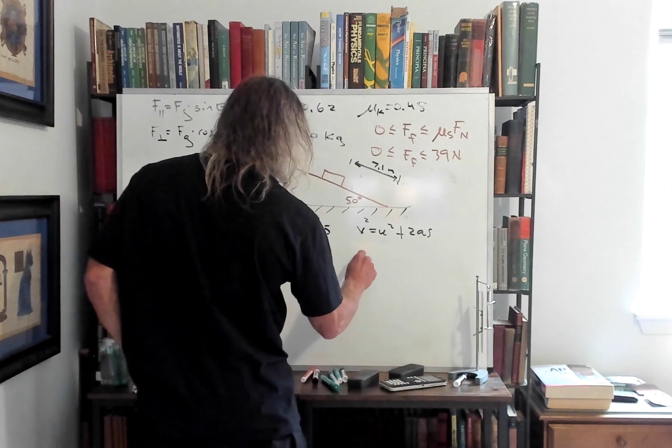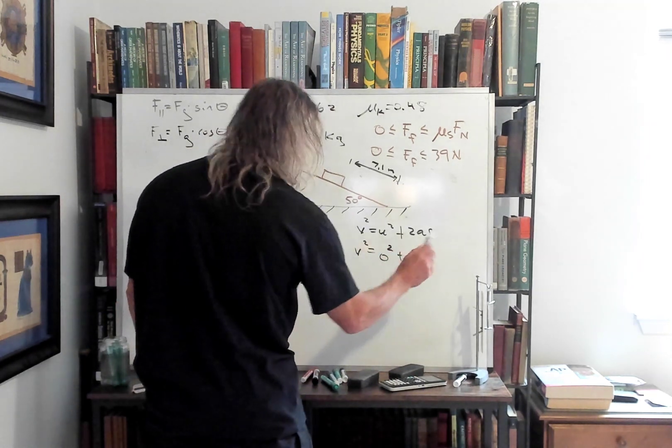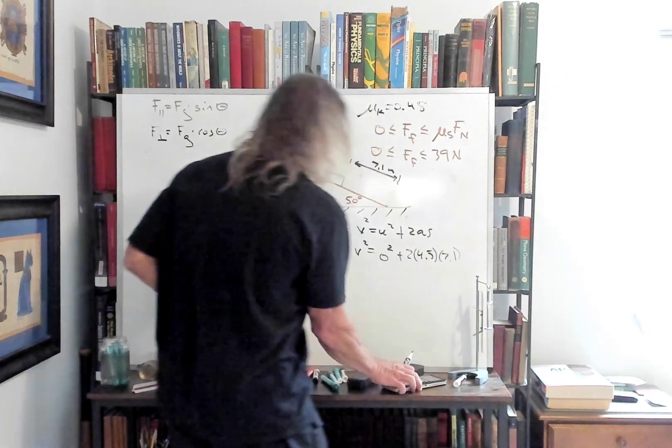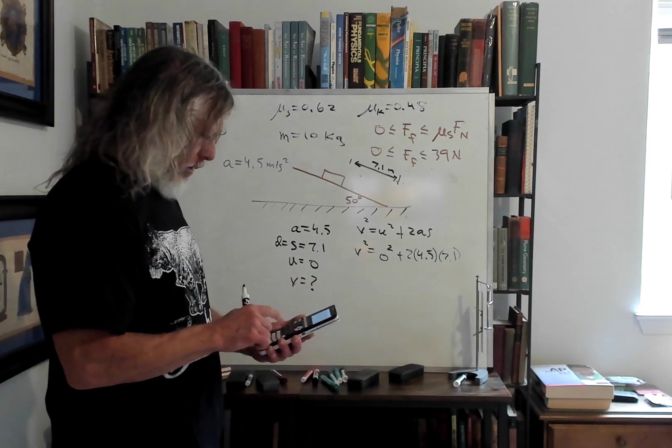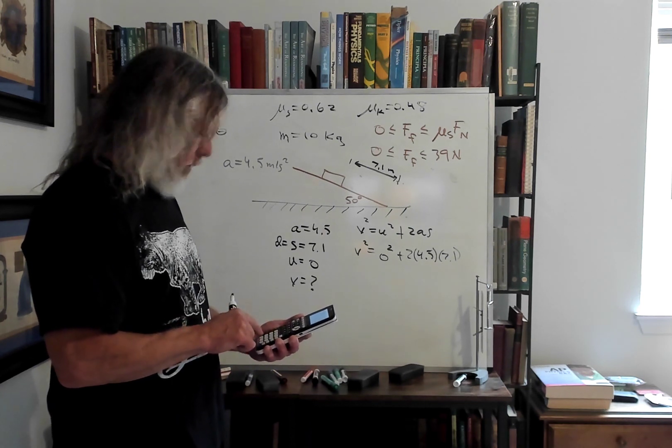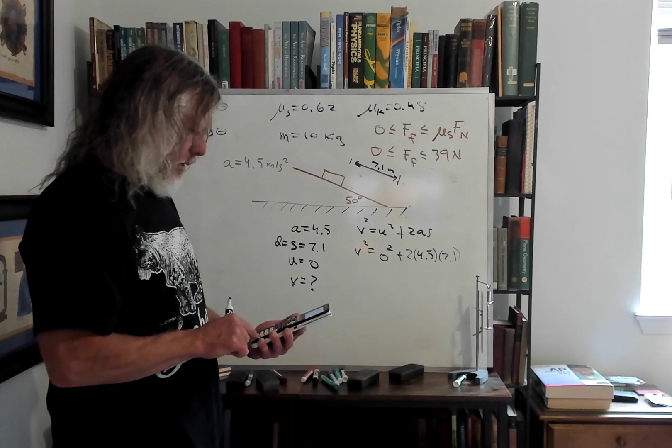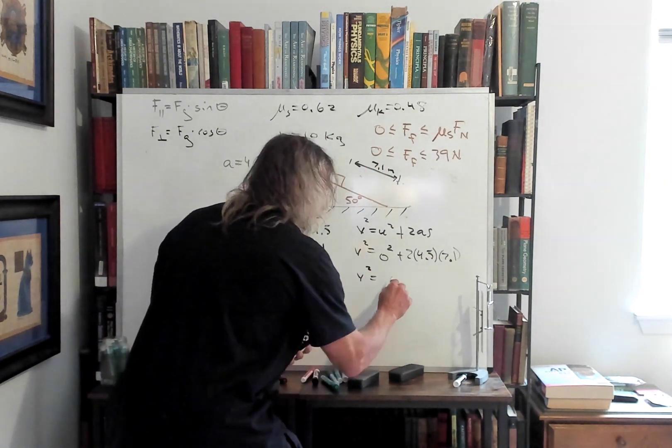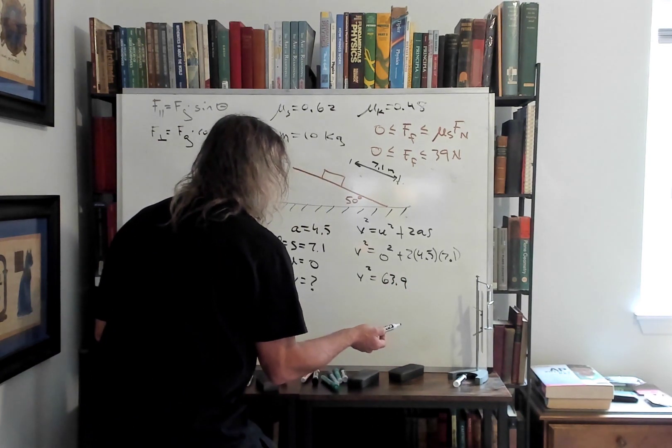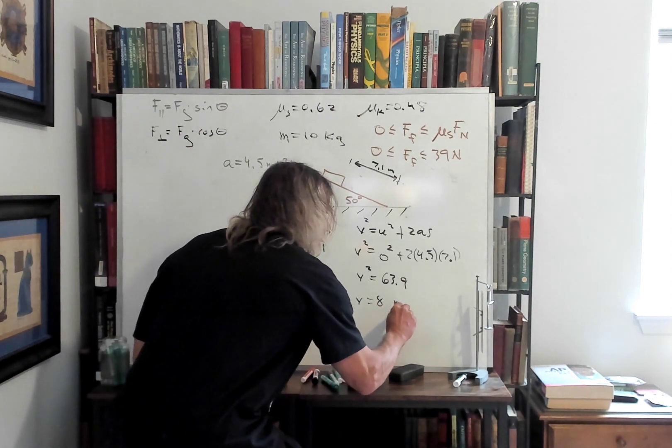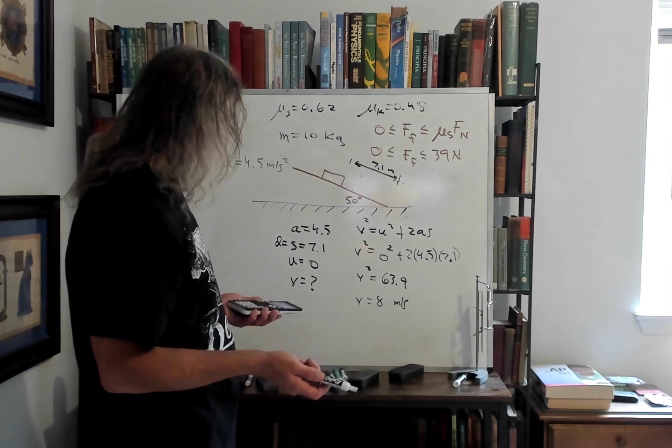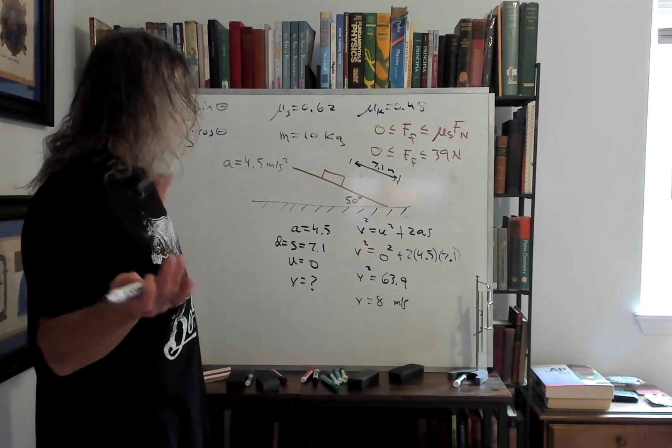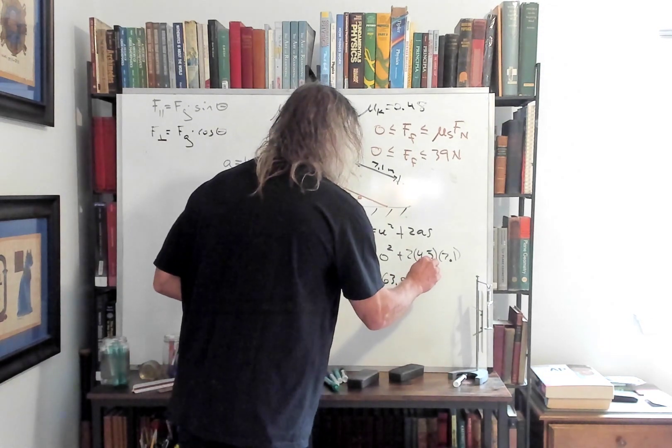Plug in our numbers. v squared equals 0 squared plus 2 times 4.5 times 7.1. So 9 times 7.1, 63.9. So v squared equals 63.9, pretty much close to 64. So v is 8 meters per second. Cool. I wish I could say I thought of that ahead of time so it would come out to be 8. I picked this and this on purpose, but I didn't. It's just accidental coolness. 8 meters per second.